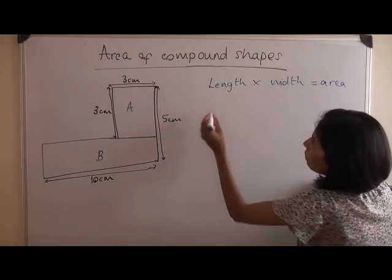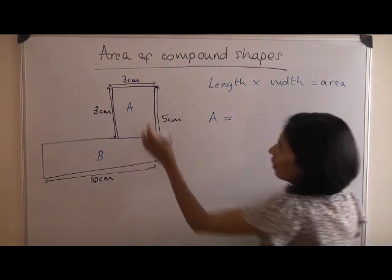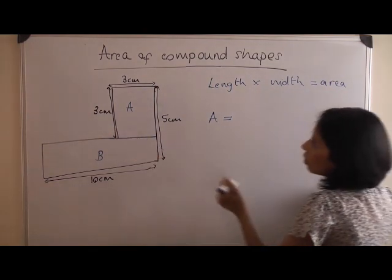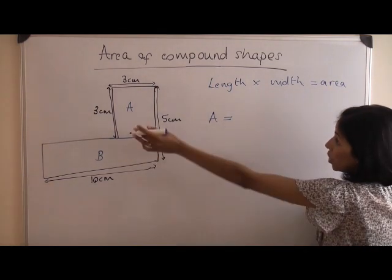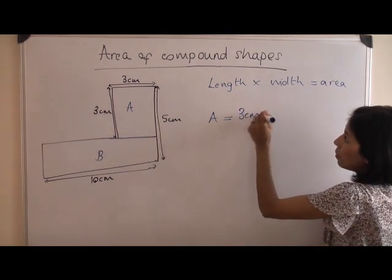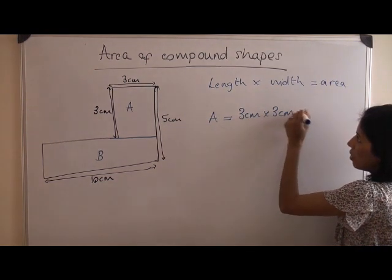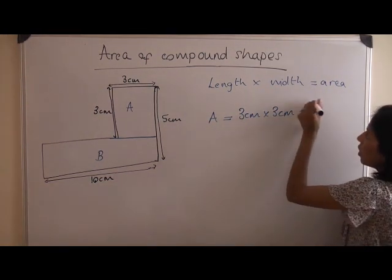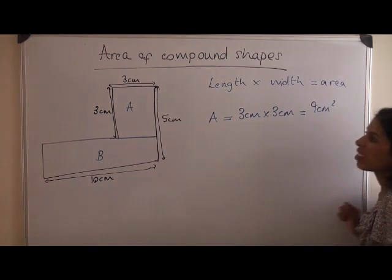For shape A, you already have a length and a width. It's not to scale, but you already have it. 3 centimetres times 3 centimetres equals 9 centimetres squared. So that was pretty simple.